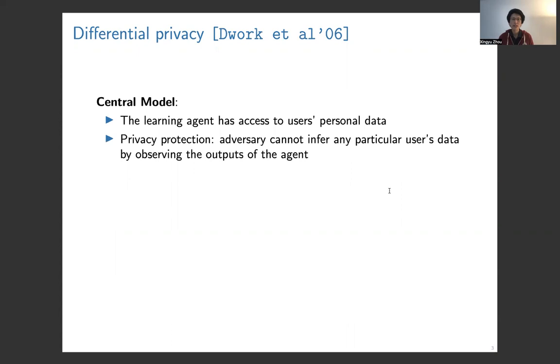To provide a formal privacy guarantee, we consider differential privacy. In particular, we mainly focus on the central model. In this model, the learning agent has access to users' personal data. The privacy burden is at the central server, which should ensure that any adversary cannot infer too much about any particular user's data by observing the output of the agent.